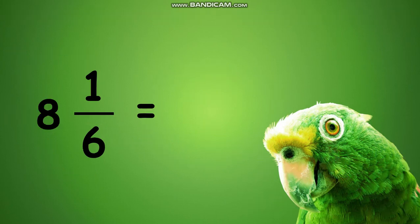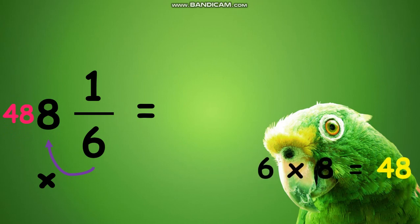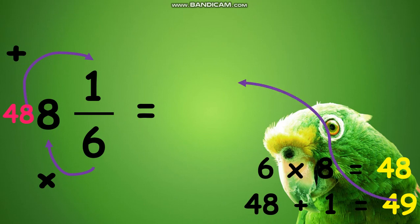Let's have another example, changing 8 and 1 sixths to an improper fraction. Simply multiply the denominator 6 to the whole number 8 equals 48. Add the numerator 1 to 48 equals 49, which will be your numerator. Then copy the same denominator 6. Therefore, your answer is 49 sixths.